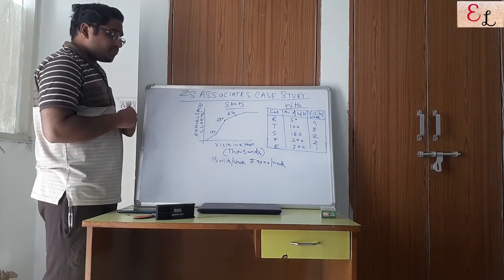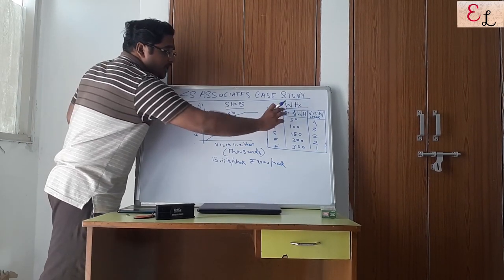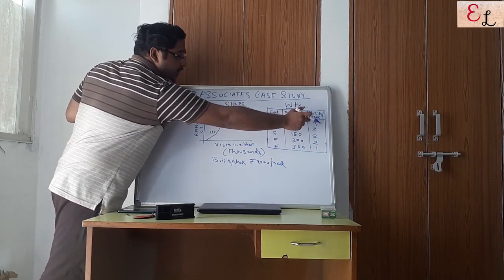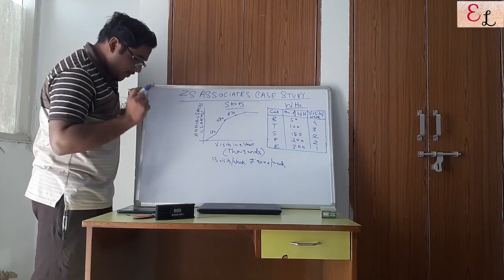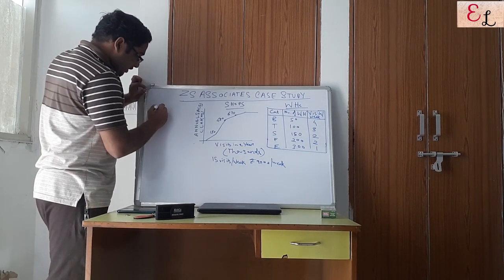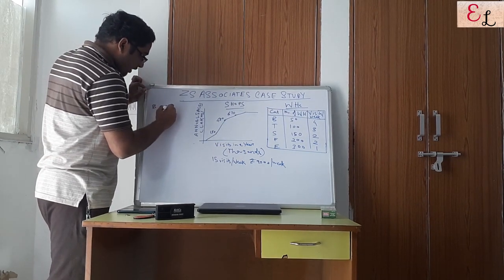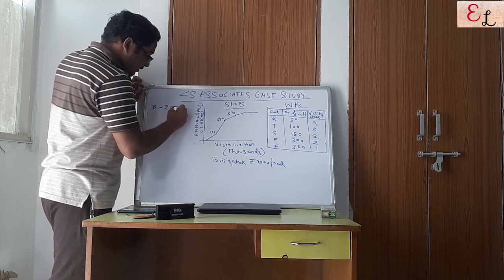So how many total visits per week does each category require? Big Money requires 200 visits in a week, that is 50 multiplied by 4.